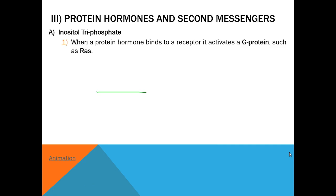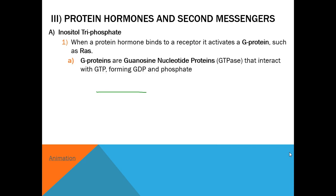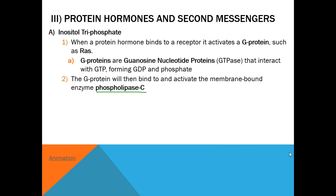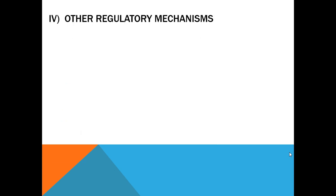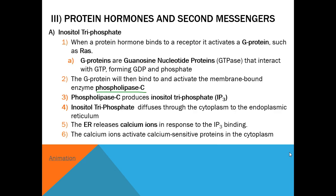Inositol triphosphate works the same way. When a protein hormone binds to a receptor, it activates a G protein. GTPases activate a different membrane-bound protein — in this case phospholipase C. When this gets activated, it triggers the formation of inositol triphosphate, which triggers the release of calcium ions, affecting calcium-sensitive proteins inside the cytoplasm.